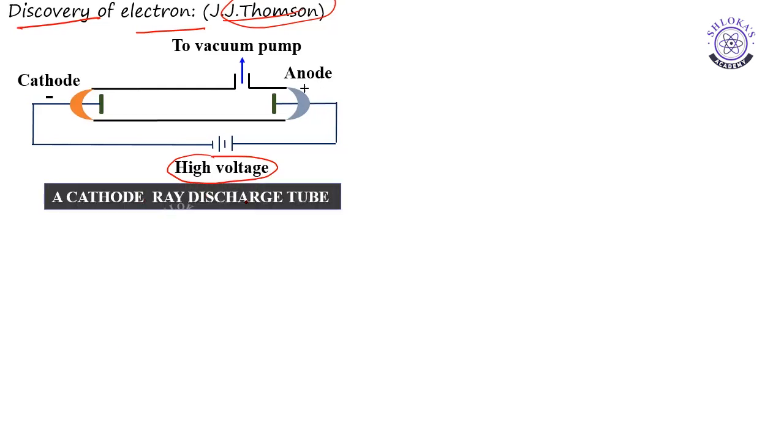This is also called as a cathode ray discharge tube. In this cathode ray discharge tube, I will explain this apparatus. This is cathode with negative charge, anode positive charge, this is vacuum pump to evacuate the gases present inside. With the help of this vacuum pump we can maintain very low pressure which is 10 to the power of minus 4 atmosphere. Here high voltage is applied. When we apply this much of electricity across these two electrodes, some invisible rays are present in this tube and they are generating at the cathode and moving towards the anode.